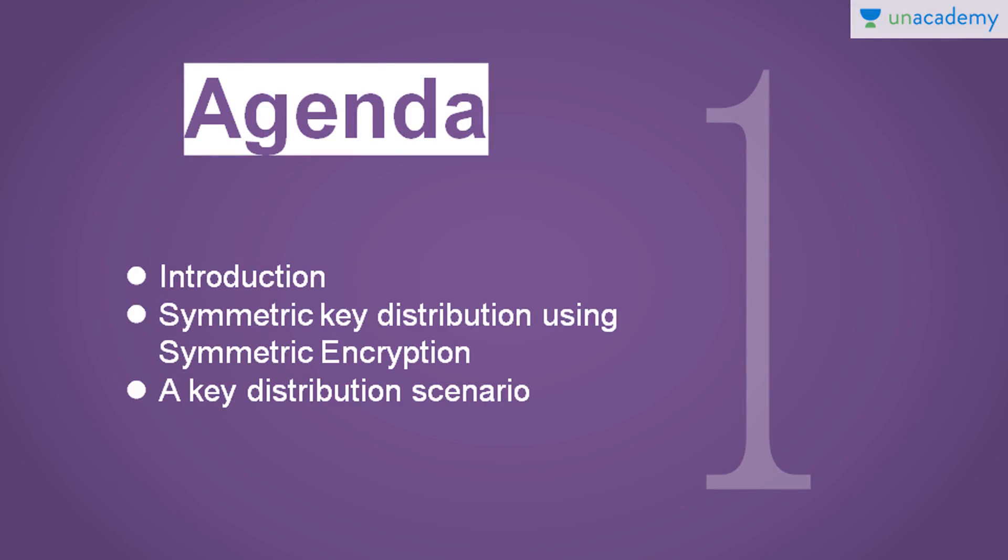First, I will give you an introduction to how the public key system works. If you have watched my first course, Learning Symmetric Cryptography the Easy Way, you might find it even simpler to understand here. Then we will see how symmetric key distribution is done using symmetric encryption method. And at the end, I will show you one key distribution scenario and explain what happens and how exactly it happens. So let's get started right away.